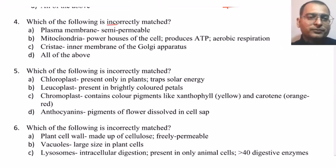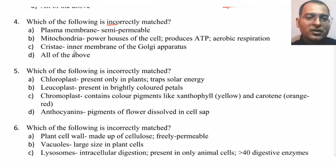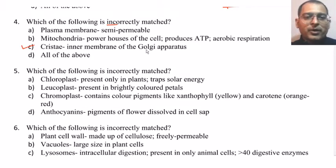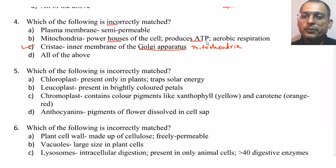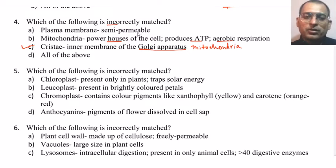Next question: which of the following is incorrectly matched? Plasma membrane — semi-permeable; mitochondria — powerhouse of the cell, produces ATP, aerobic respiration; cristae — inner membrane of the Golgi apparatus; all of the above. The answer is cristae — cristae is actually the inner membrane of the mitochondria, not the Golgi apparatus. Mitochondria is the powerhouse of the cell, producing ATP, the energy currency molecule, through aerobic respiration. The plasma membrane is selectively permeable and does not allow all types of molecules to pass through.